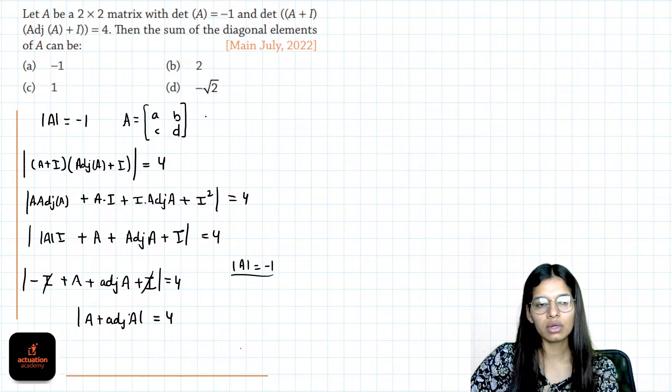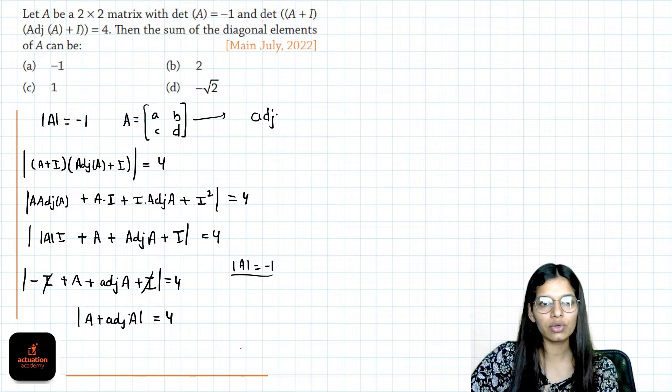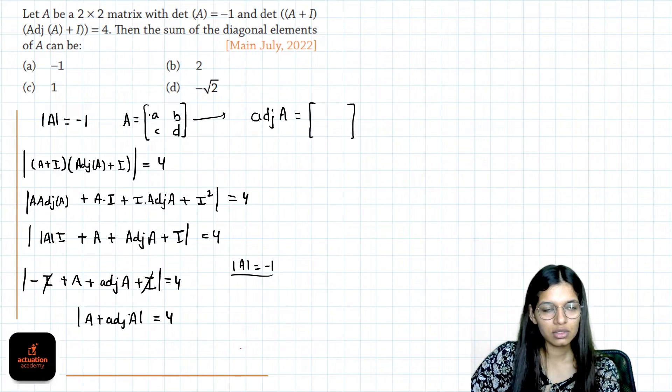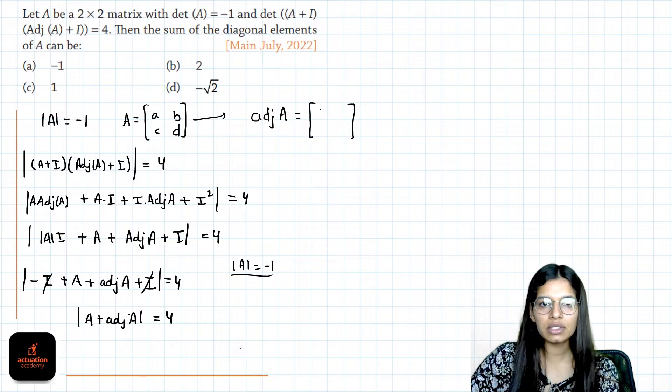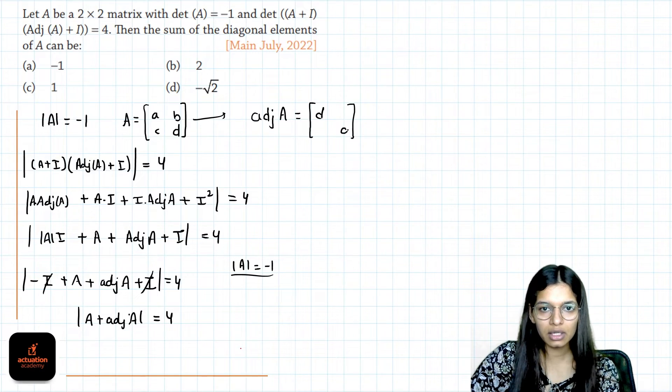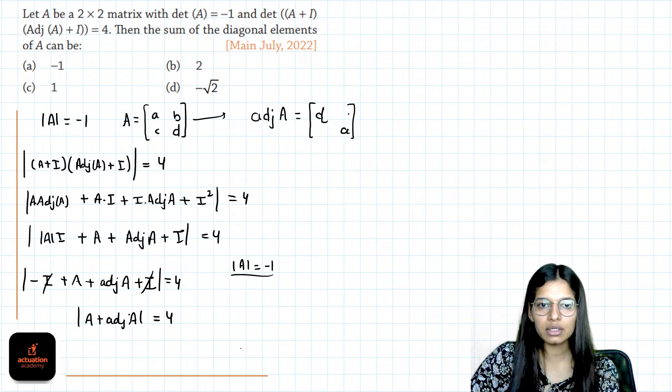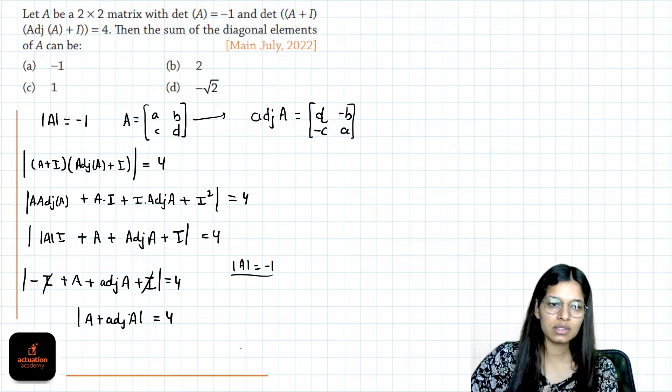So for 2 cross 2 matrix, we have a direct trick to find adjoint of A. Just reverse the diagonal elements, d and a, interchange them. Next, for non-diagonal entries, just change their sign, so it will be minus b and minus c.